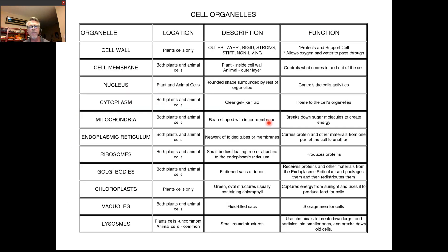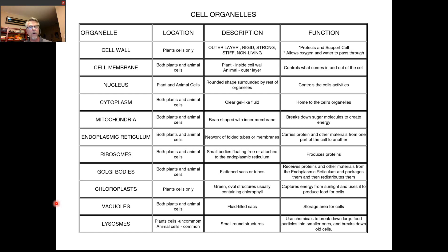The last page on your notes handout is the cell organelles chart, already filled out. It lists organelles in the left-hand column, where you find each one — plant or animal — and what it does and what it looks like. You should become very familiar with this chart. Flashcards are an excellent way to learn organelles and their functions. You'll be expected to know these things. That's the end of our cell notes — I hope that helped and we'll debrief it next time in class.